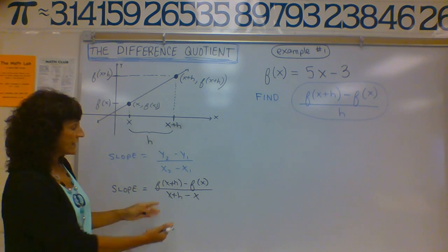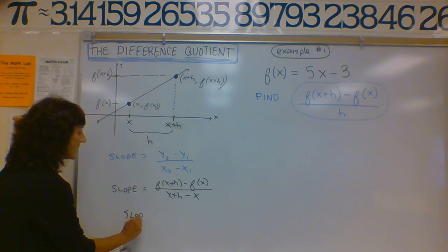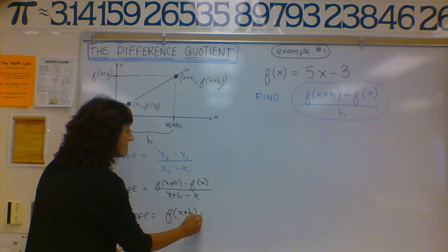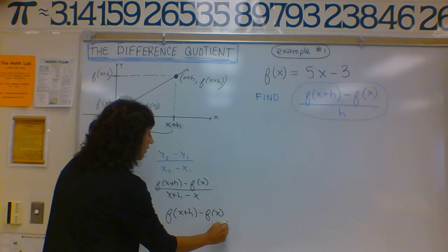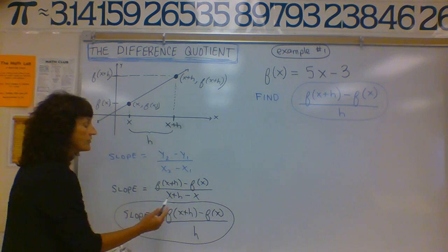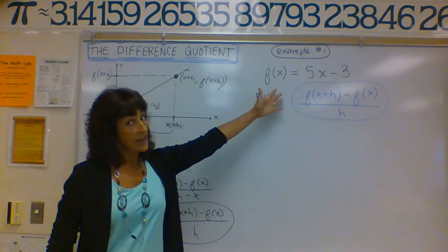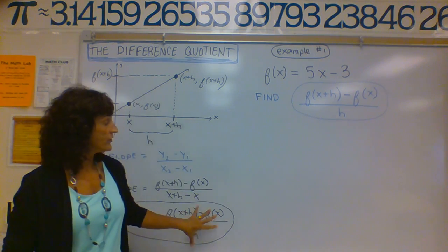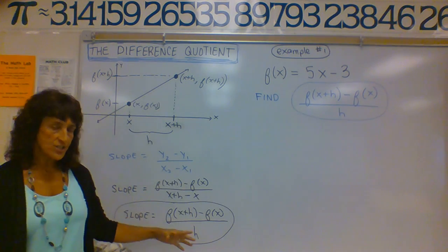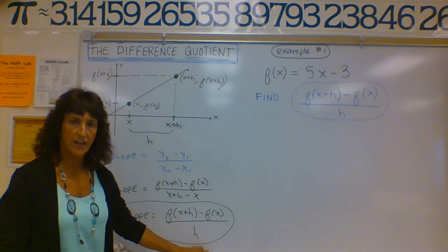If you look at the denominator, I can simplify it — the x's cancel out. So the slope of my line is f of x plus h minus f of x, all over h. This represents my rate of change, rise over run — and it's exactly my difference quotient. This is where the notation comes from, and it's a foundational algebraic piece that will be used in differential calculus.